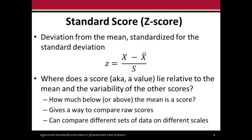You can also see in this equation that our value of z for the mean itself, if the value of x was the mean, it would be the mean minus the mean, so the value of the z-score here would be zero.